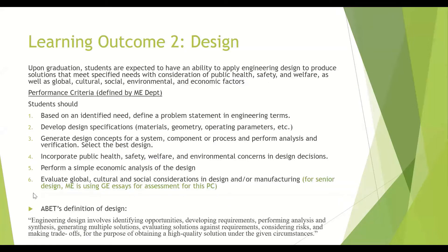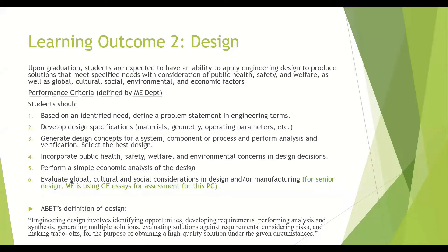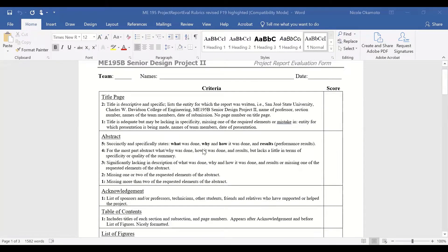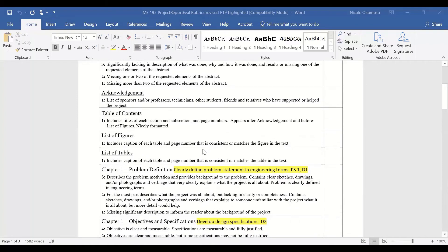In the ME department, we're using three different courses to assess design. I'm going to look at our senior design project for the second semester. In that class, we use the final project report to assess criteria one through five. We can't just say everybody got A's and B's on their final project report, so they're doing a good job on design, because that kind of assessment doesn't hit all the different elements of the learning outcome. This is our grading rubric for senior design — the final report in the second semester. It's by far the most detailed rubric we use in the whole department — it's three pages long. Students have it ahead of time so they can tailor their project reports to what they see here.